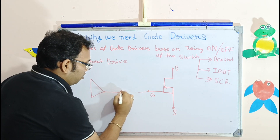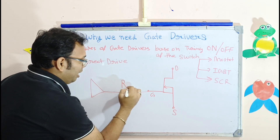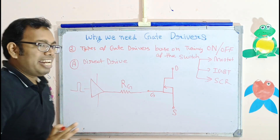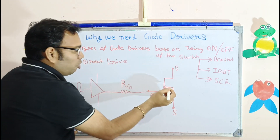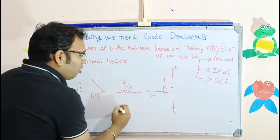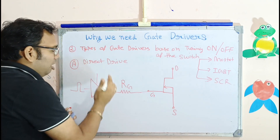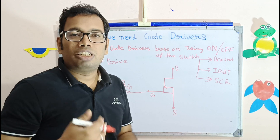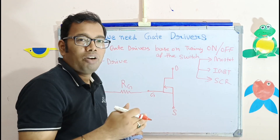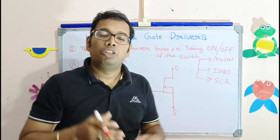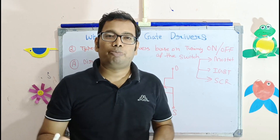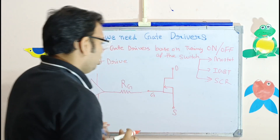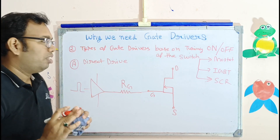The driver gives a direct output to the gate with the help of one resistance, called gate resistance, and the signal comes from the microcontroller. In this direct drive method, whenever we want to switch on the power switch, the device turns it on and then becomes zero and the switch turns off. You have to be careful when using two switches in series, H-bridge, or half-bridge drive — the MOSFET should turn off before turning on the other switch, otherwise shoot-through will happen.